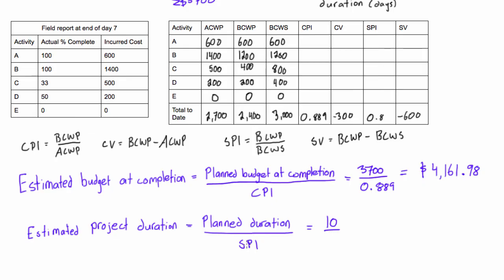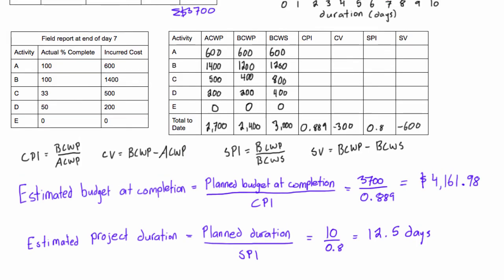So anyways, planned duration - all we do here is just have 10 divided by our SPI, and our SPI was 0.8. So if you just get 10 divided by 0.8, that is actually 12.5 days. That is our estimated project duration.